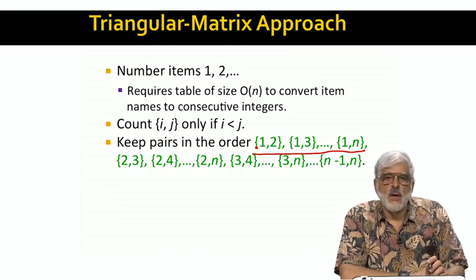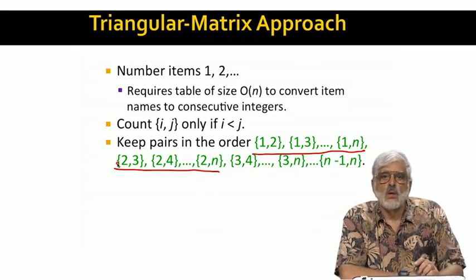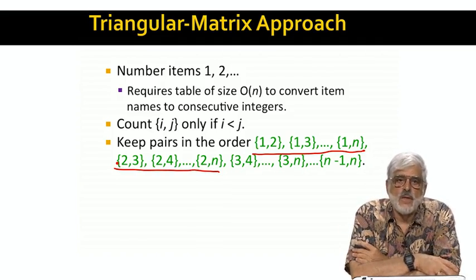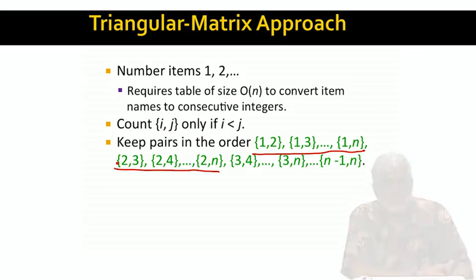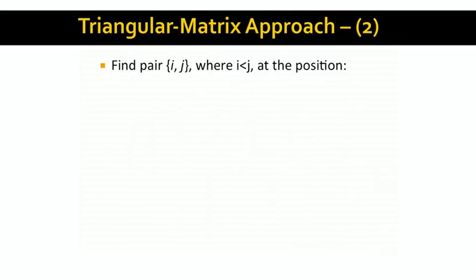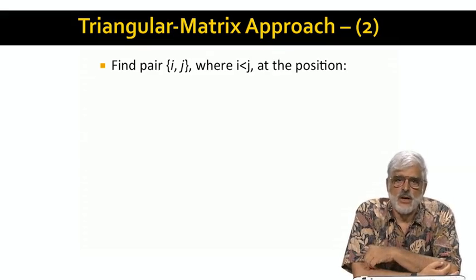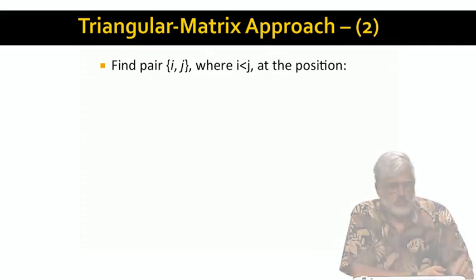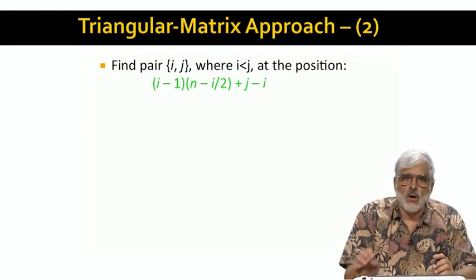Then come the n minus two pairs whose smaller member is two. Again, these are ordered by the larger member. Then the n minus three pairs with three as the smaller and so on. What we really have is a one dimensional array and we need a function that takes i and j, where i is less than j, and turns it into the position in the array belonging to this pair. Here's the magic formula. I'll let you figure out why it works.